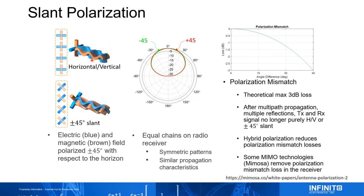If your AP transmits H and V and your CPE receives ±45 slant, theoretically the max drop in link strength is 3 dB. But typically you don't see that due to multipath and atmospheric effects — the polarization is no longer pure H/V or 45 slant after propagating. In the field, customers are seeing only a half to 1 dB drop with this polarization mismatch. Some radios like the MIMOSA A5C and C5C can actually cancel out the polarization mismatch entirely.